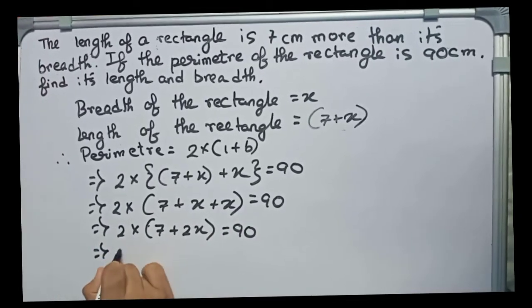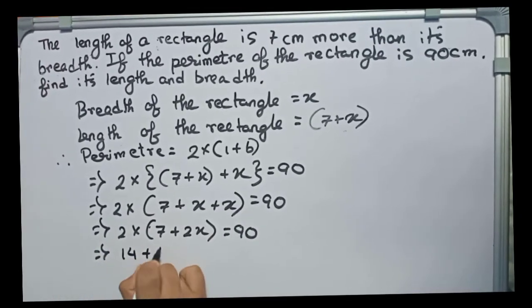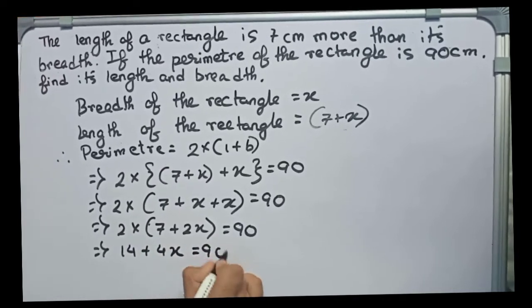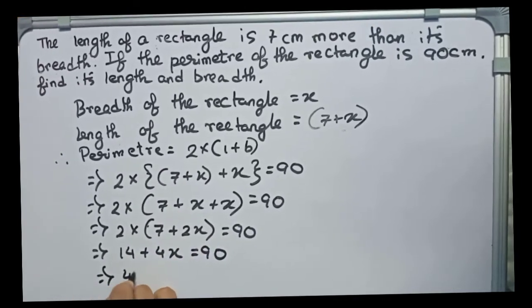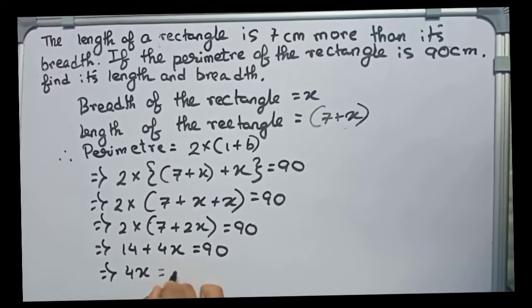Now multiply by 2: 14 plus 4x equals 90. Now 4x equals, we take 14 to this side and minus it.